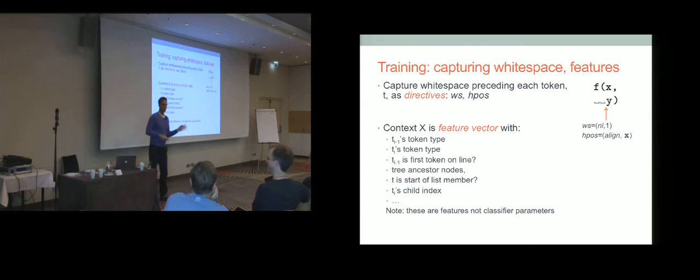Just to give you a taste of the features that we have, we need to know something about the token types in the immediate vicinity. I want to know whether the previous token was on a line by itself, or start of a line. I want to know what my ancestors are in the parse tree. Am I in an if statement, in an if statement? Lots and lots of features that we developed as the process went along.